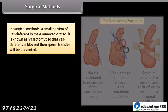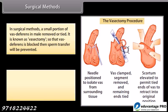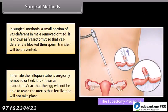In surgical methods, a small portion of the vas deferens in the male is removed or tied — this is known as vasectomy — so that the vas deferens is blocked and sperm transfer is prevented. In females, the fallopian tube is surgically removed or tied — this is known as tubectomy — so that the egg will not be able to reach the uterus and fertilization will not take place.